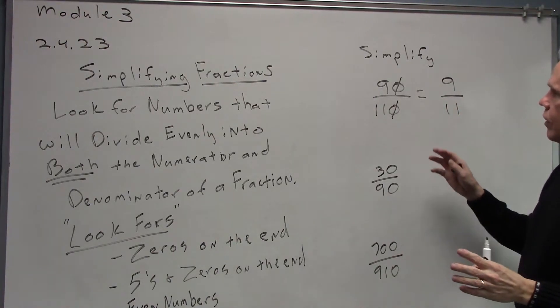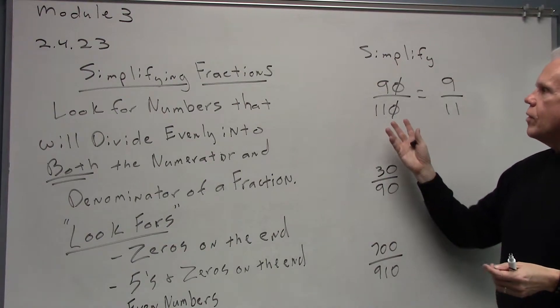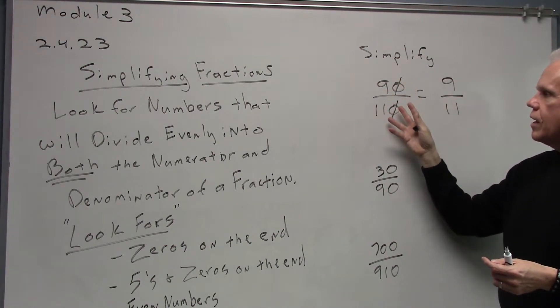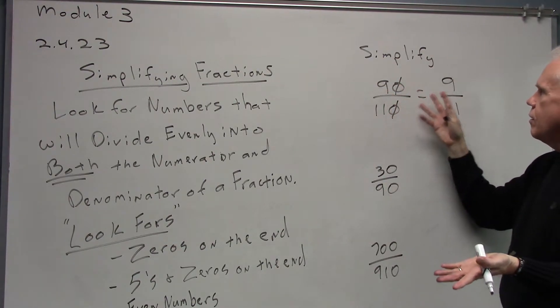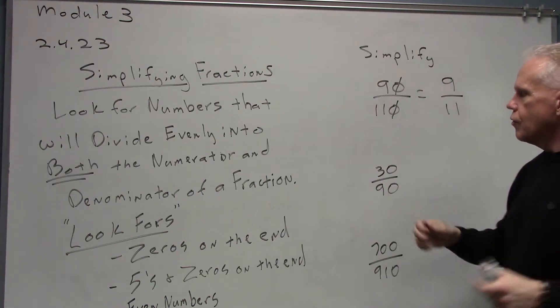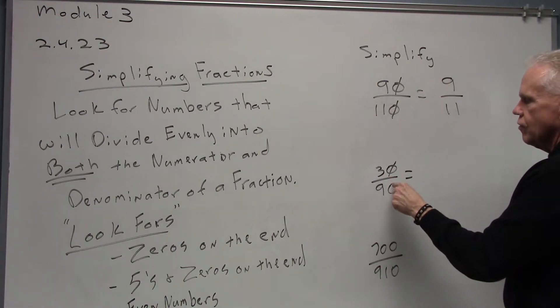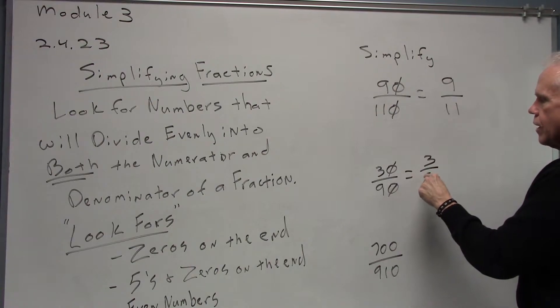When we canceled those zeros, it was the same as if we had divided the top by 10 and divided the bottom by 10. We just did it by canceling those zeros. When we get to 30 over 90, we can do the same thing and we'll get 3 over 9.